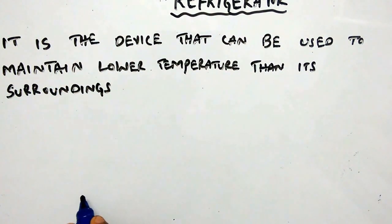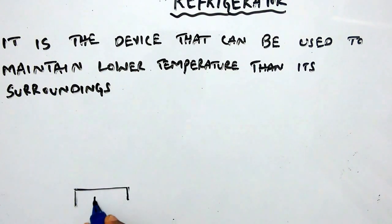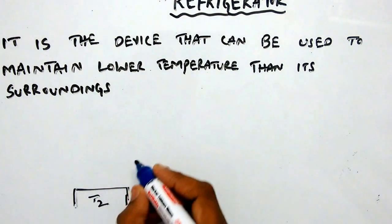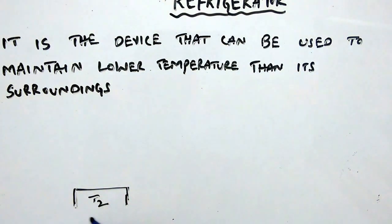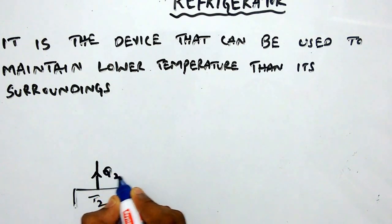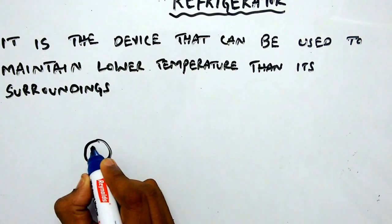Now let us consider T2, the temperature to be maintained in the storage space. For maintaining this temperature, which is lower than its surroundings, we should extract a certain amount of heat with the help of a device called a refrigerator.